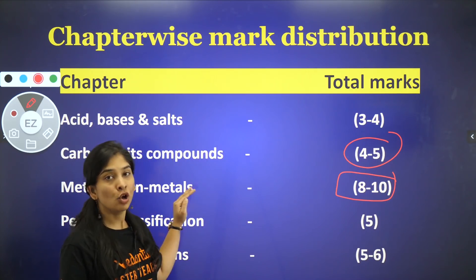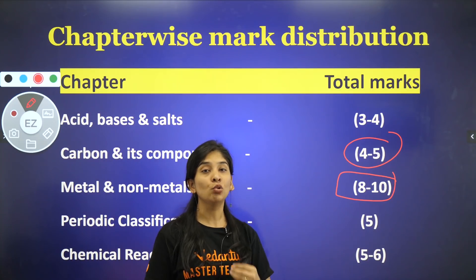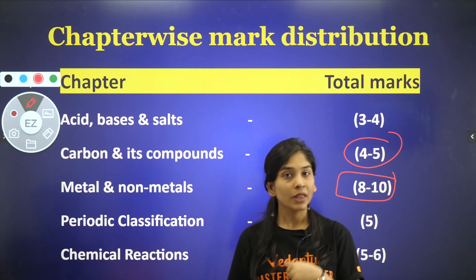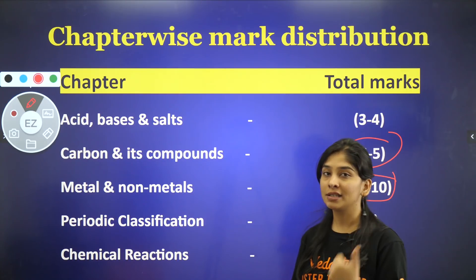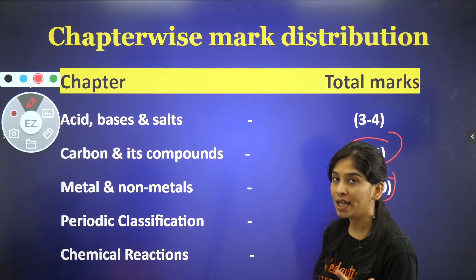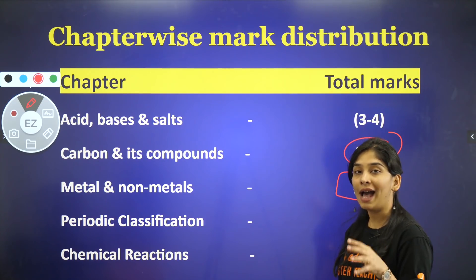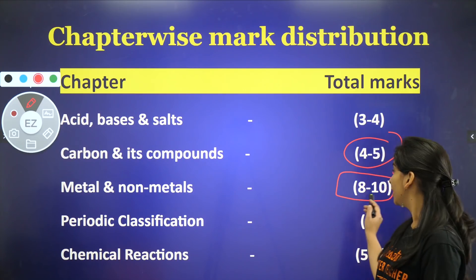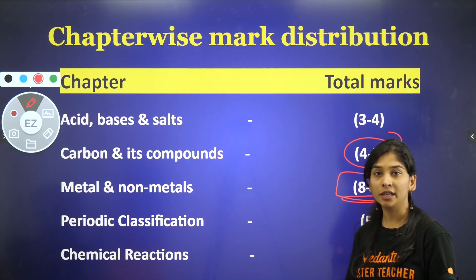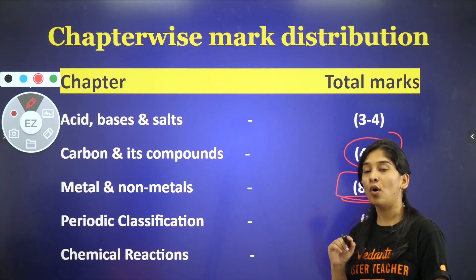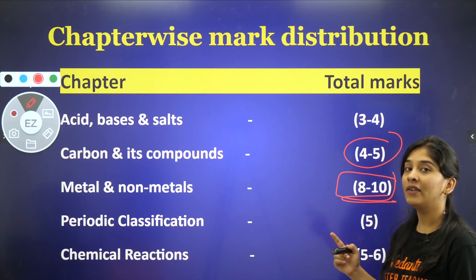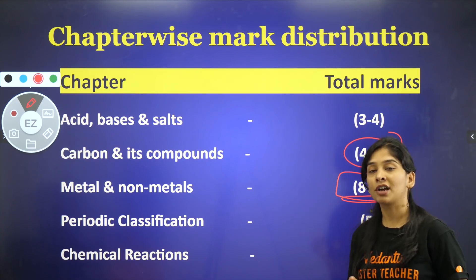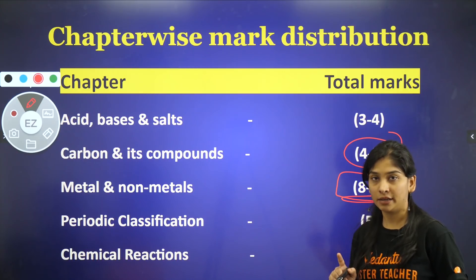Metals and Non-Metals ki baat karun — 8 to 10 marks ka part hai, in terms of assertion and reasoning, MCQ, and large type questions. Generally a big question comes from Metals and Non-Metals. Is chapter ko bohut achhe se karna hai — refining wale part pe bohut zahada dhaan dena hai, and all the extraction of metals.